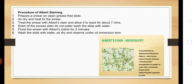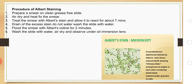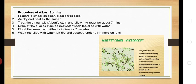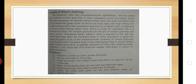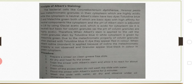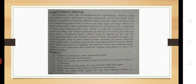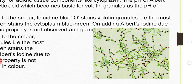For the procedure: prepare the smear, then add the first stain — Albert stain A containing malachite green and toluidine blue — and allow it to react for 7 minutes, then wash. After that, add the second stain, Albert's iodine solution, and keep it for 2 minutes. Then wash the slide, air dry it, and observe under the microscope.